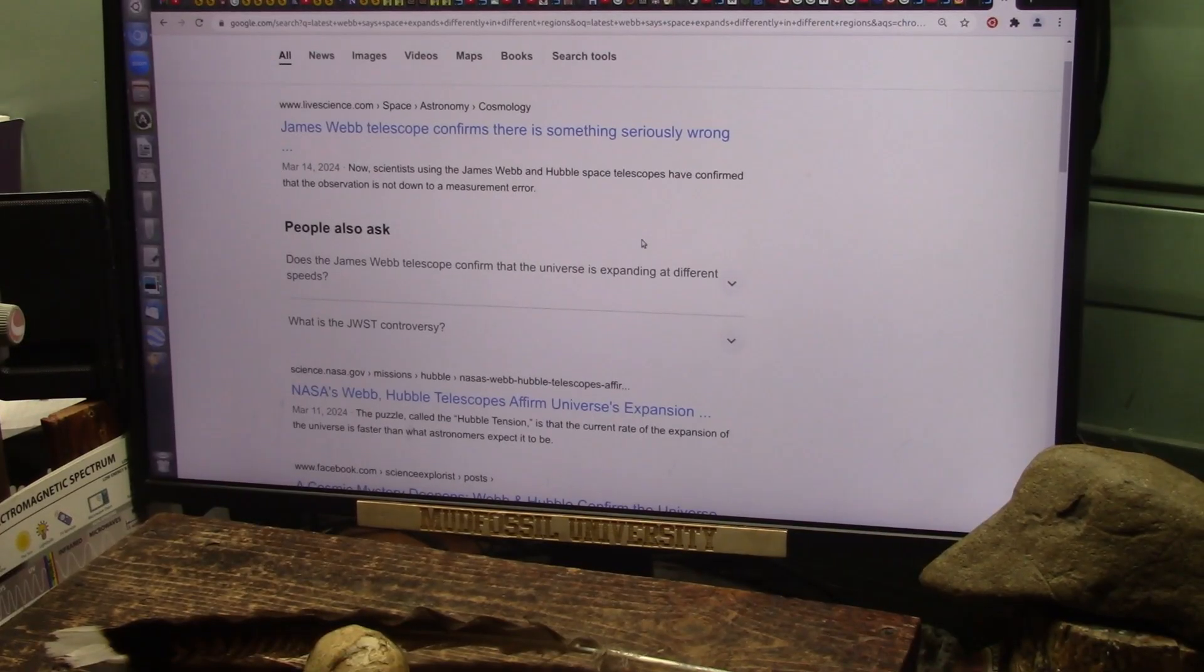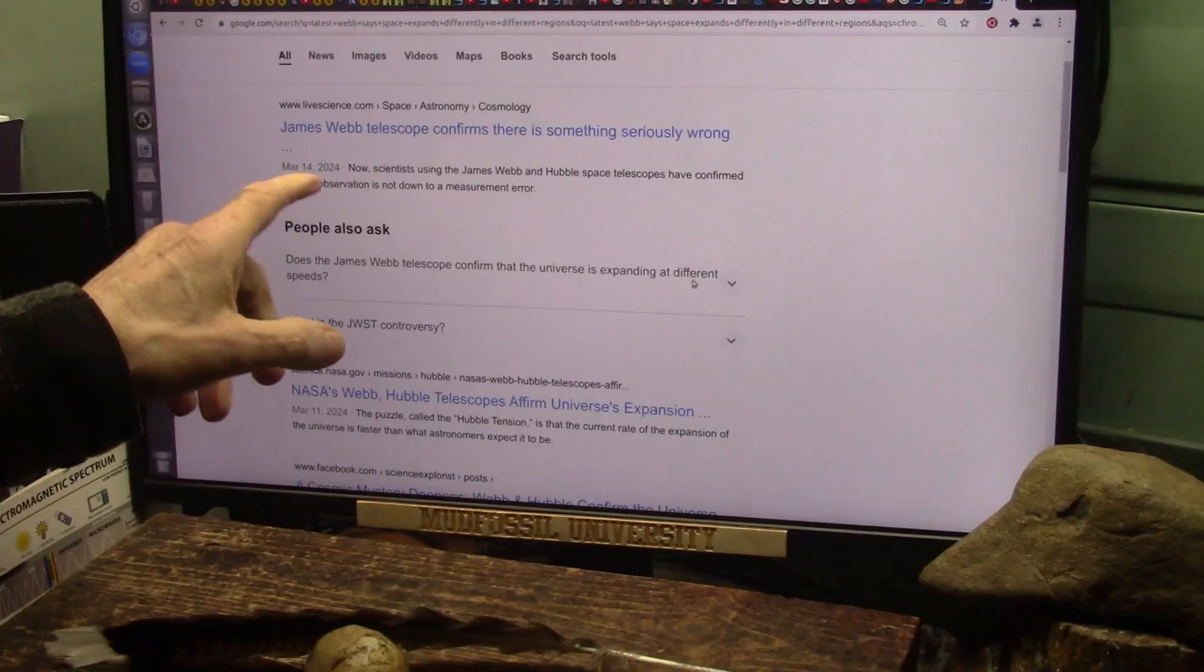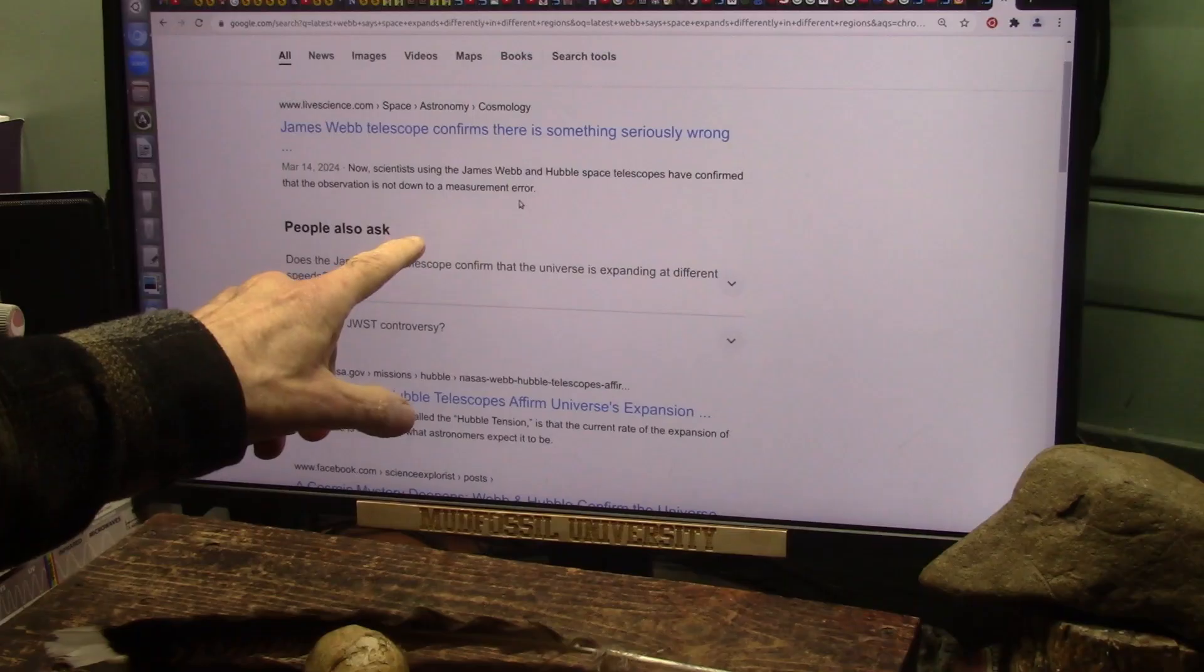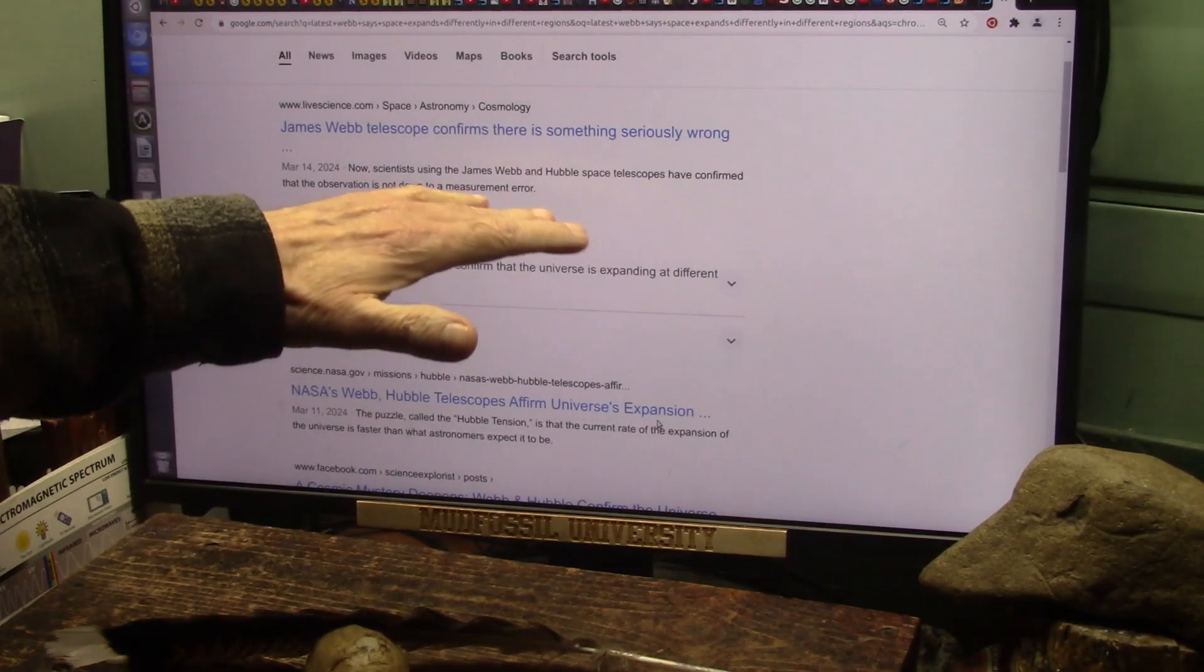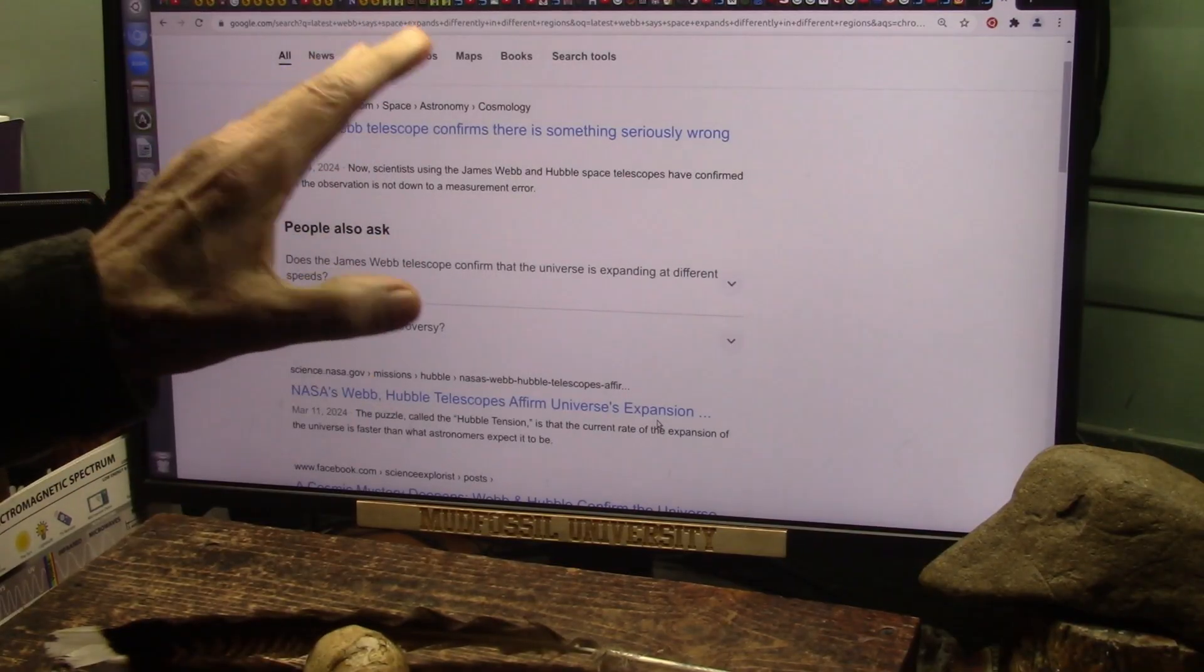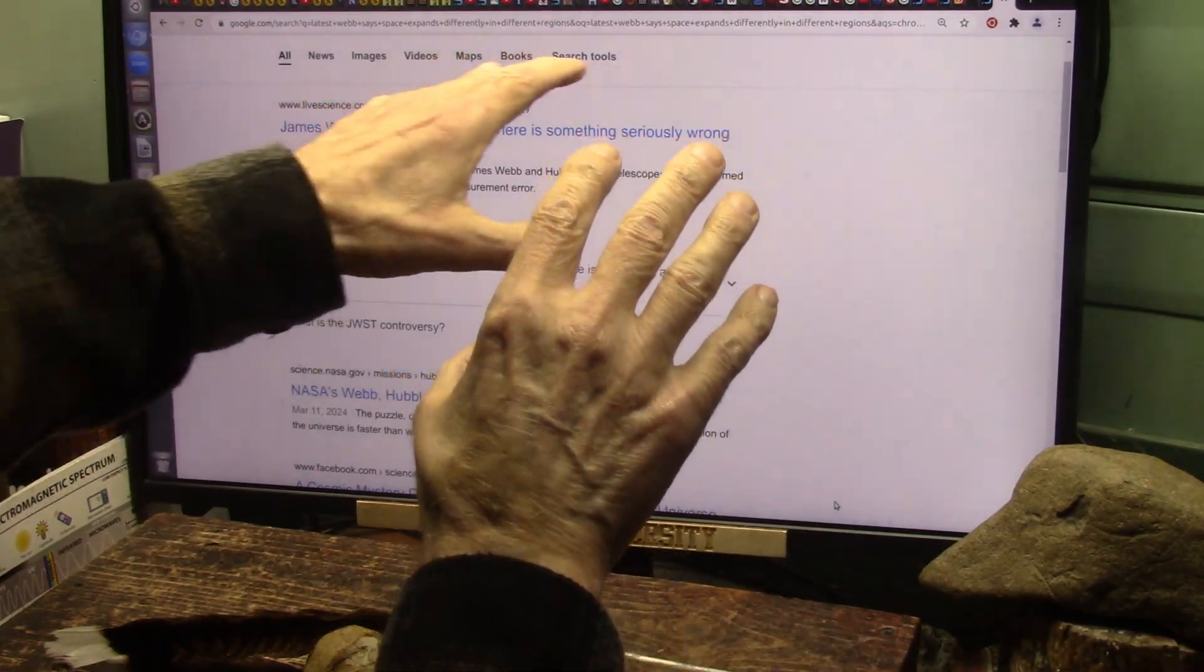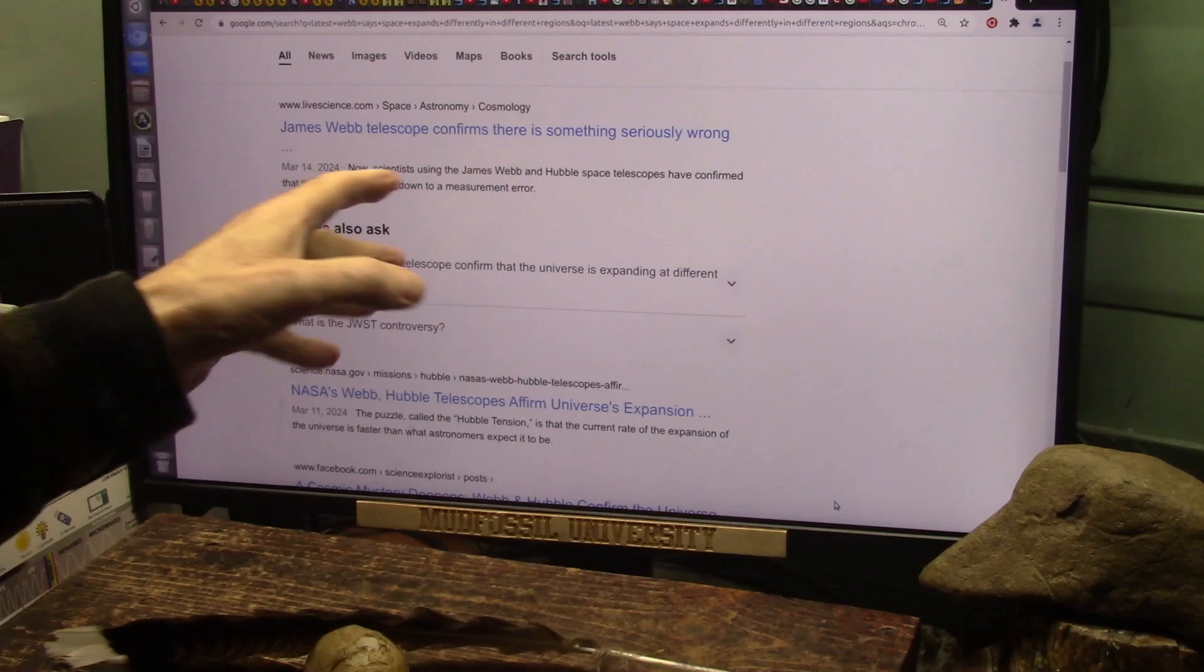Okay, we all hear about how far away they're seeing the distances in the galaxies and so forth. Well, they realize something is terribly wrong, seriously wrong, and it's not down to a measurement error. The error is that they say light travels the same speed no matter what you're going through. Space is completely saturated with particles, so some areas lights go slower, and some areas light goes faster. Depends on what is going through. And this is what they're finding.